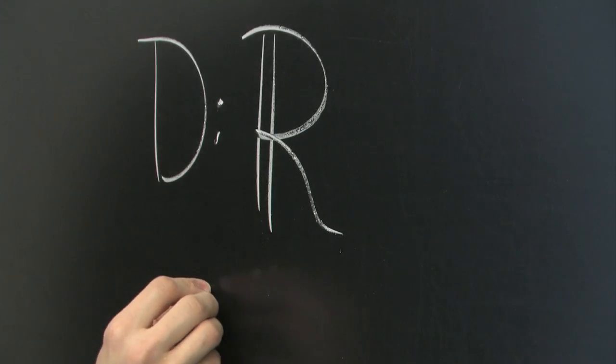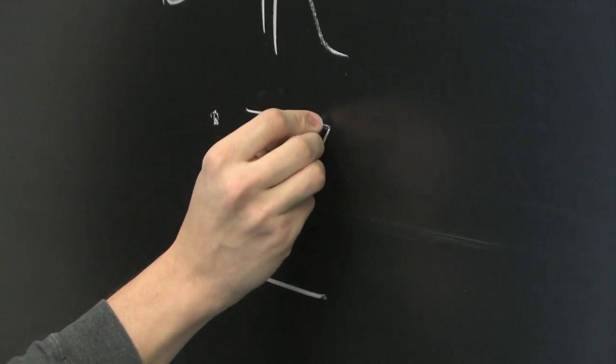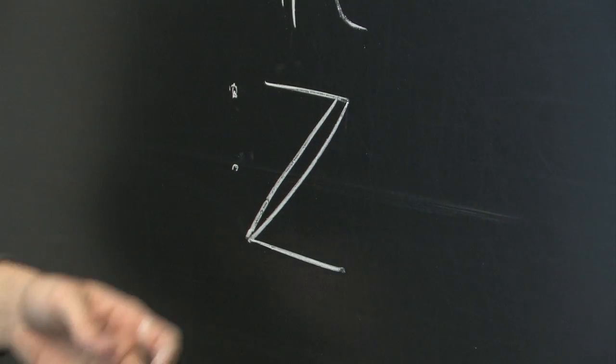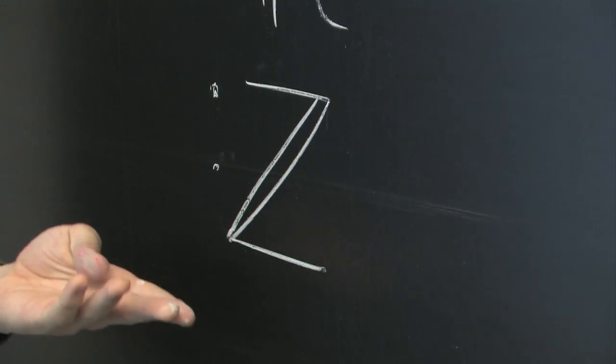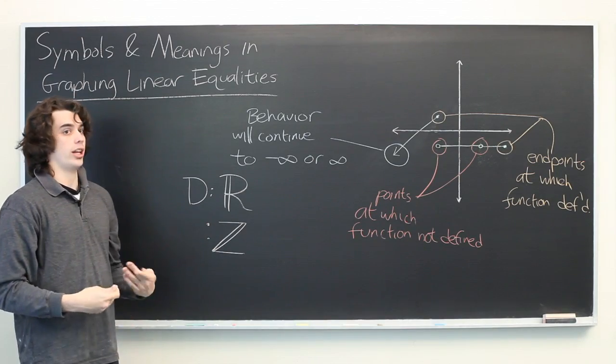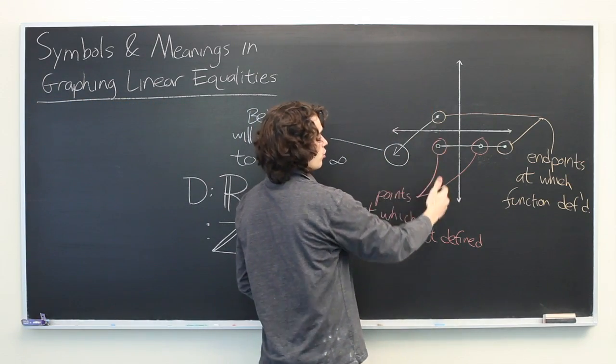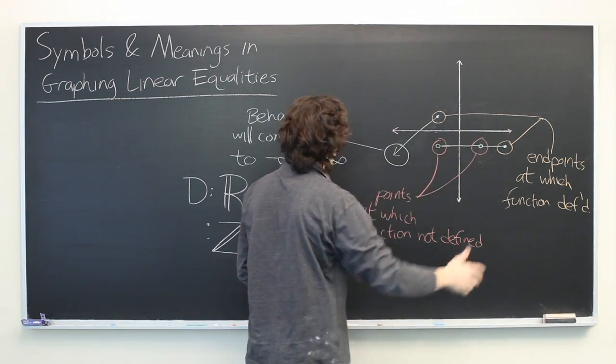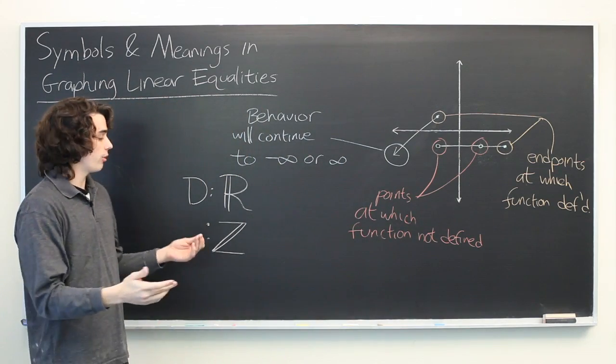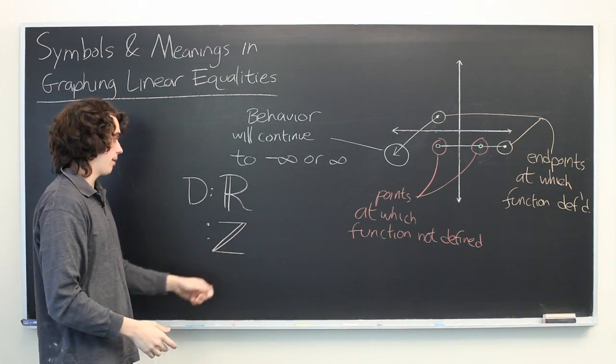A similar piece of notation is this. This bold face Z. What this typically means is the set of all integers. So negative 513, 1, 27. All the integers from negative infinity to infinity are included in this set.